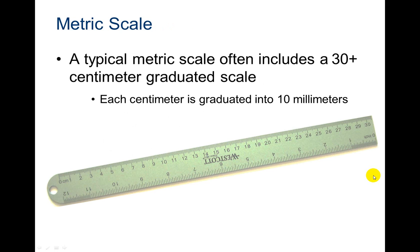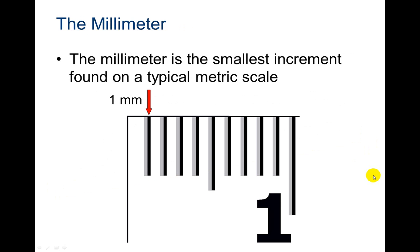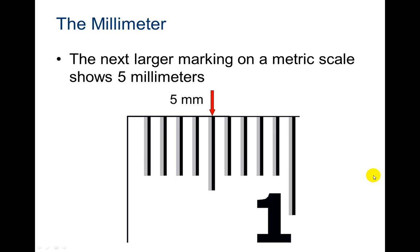So here's a typical metric scale ruler. That often includes a 30 plus centimeter graduated scale. Each centimeter is graduated into 10 millimeters. Like this. The millimeter is the smallest increment found on a typical metric scale. So the next largest line, so here's the smallest ones, those are your millimeters.